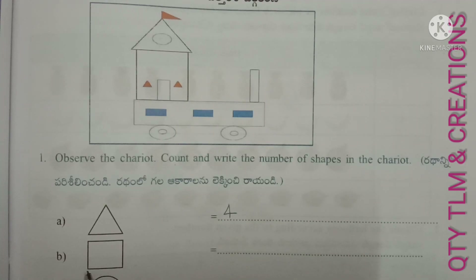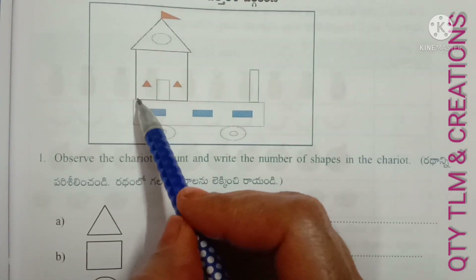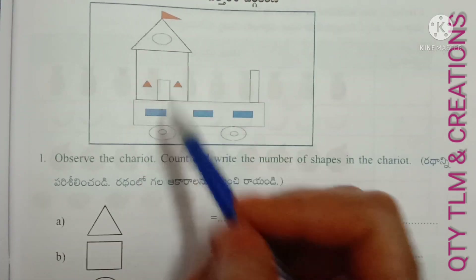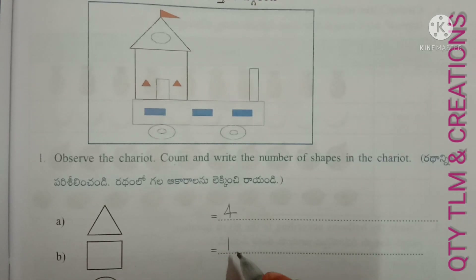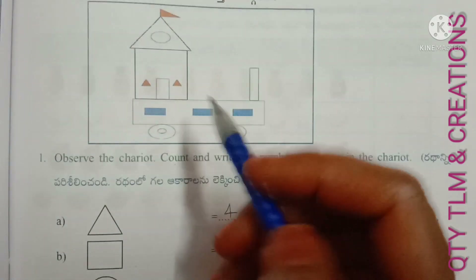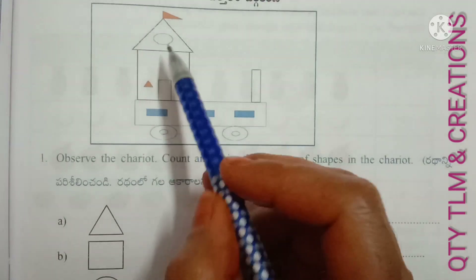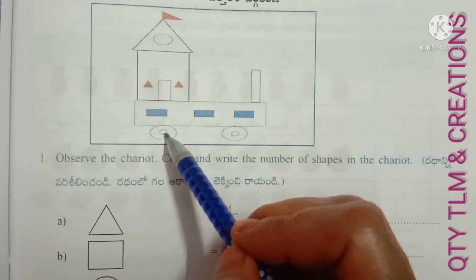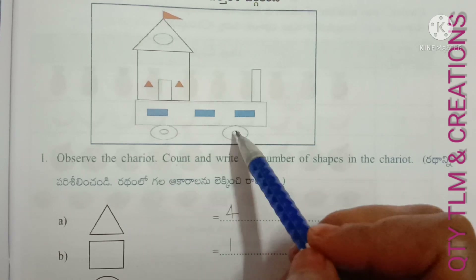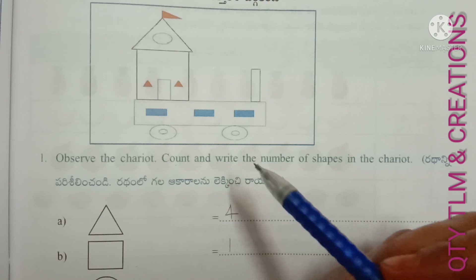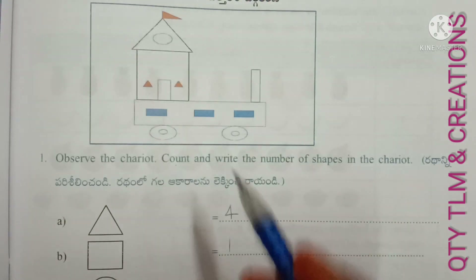Next, square. This is a square. So, 1 square is there in the chariot. Next, circle. How many circles are there? 1, 2, 3, 4, 5. There are 5 circles in the chariot.